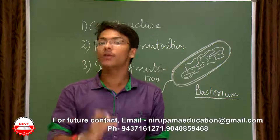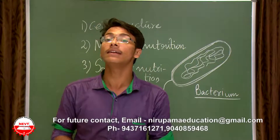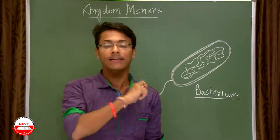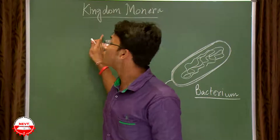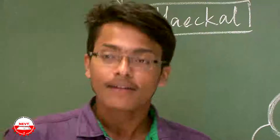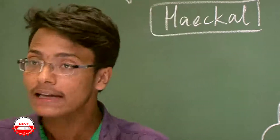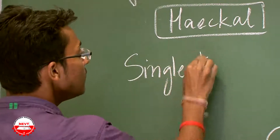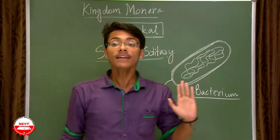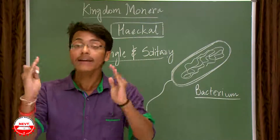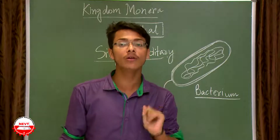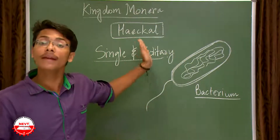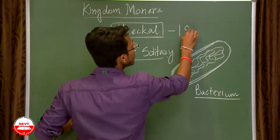Now we are going into the very first kingdom — Kingdom Monera. Ernst Haeckel, who was responsible for the five kingdom classification, for the first time in the year 1866 made the classification of Kingdom Monera. The name is derived from a Greek word meaning 'single and solitary,' indicating these organisms prefer to live alone and do not live in colonies.